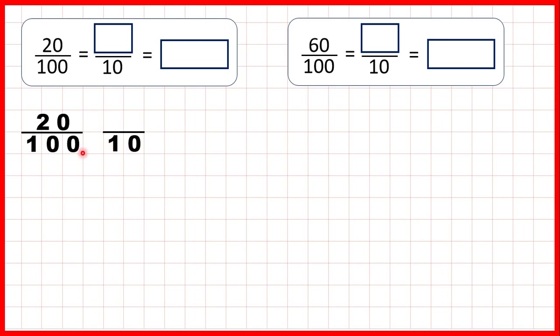Remember, as well as multiplication we can use division to find equivalent fractions, and 100 divided by 10 is 10. When we're finding equivalent fractions, what we do to the denominator we need to do to the numerator as well, and 20 divided by 10 is 2.